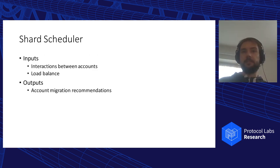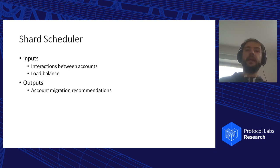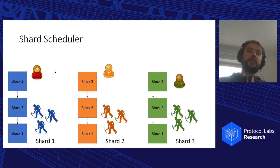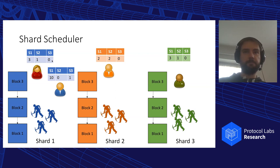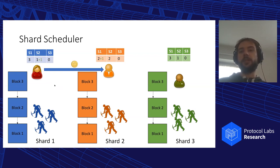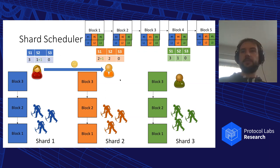Our system observes the interactions between accounts and the load balance across all shards, then outputs account migration recommendations — suggesting, for instance, that a specific account should be migrated to a specific shard at a specific time. To do this, we enhance the state of every single account with what we call an alignment vector, which tells us how many transactions with every single shard each account had. For example, Alice had three transactions with shard 1, one with shard 2, and zero with shard 3. We also enhance the beacon chain with load statistics — information about the load of every shard, expressed as total transaction size as in Bitcoin, or complexity as expressed in gas for Ethereum.